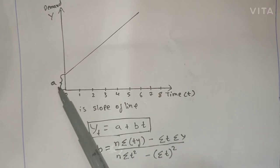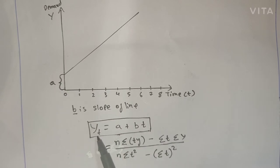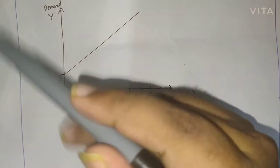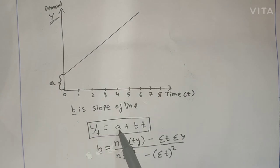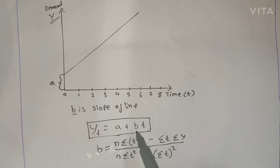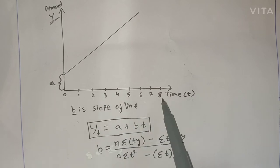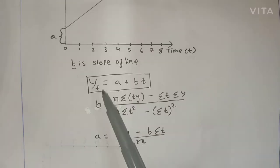The formula for trend projection is y(t) = a + b*t, where y(t) is your demand at a respective time period, a is your intercept, b is the slope of the line, and t is the time period at which you are finding the demand. Using trend projection, you can find demand at any point in time.